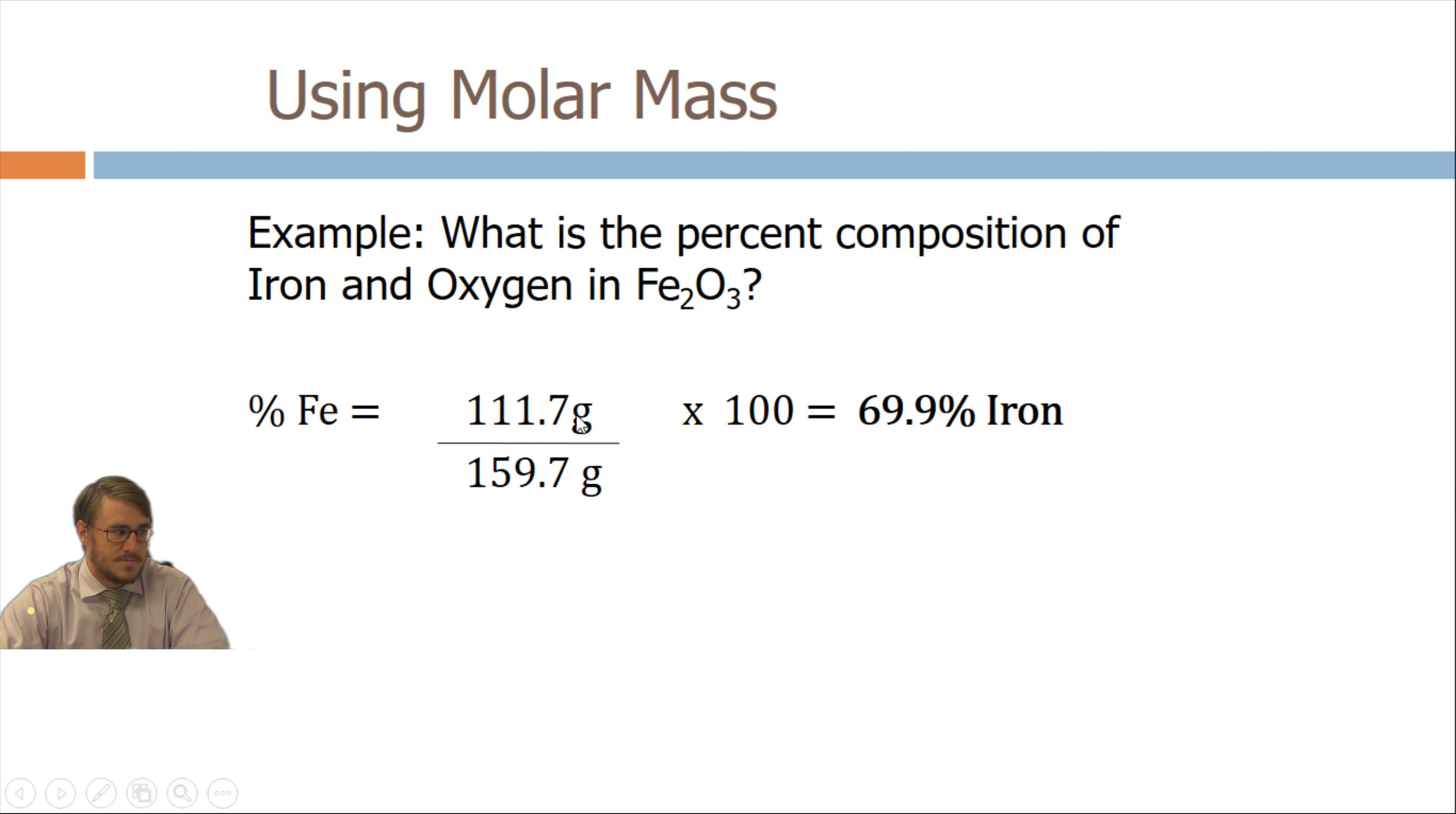Part that is Fe is percent Fe, part over whole. Percent oxygen, part over whole, 48 over 159.7. That's part that is oxygen over the whole. The whole thing is part over whole, part over whole, part over whole. And what we find out from this percent composition is that the entire formula, the whole compound Fe2O3, is the percent composition every time.